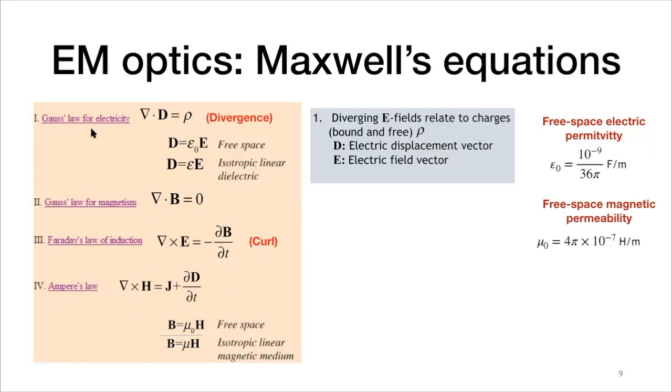Maxwell's equations are four equations relating electric fields and magnetic fields to free charges and currents. The first law in Maxwell's equation is the Gauss's law for electricity. And we read it like this: The divergence of D equals rho.